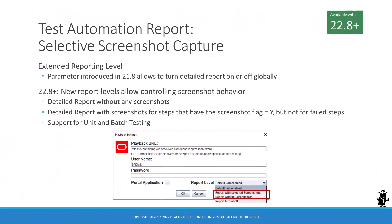If you are using Siebel Test Automation with 21.8 or higher, you might be aware of the option to turn detailed reporting on or off. With 22.8, Oracle has enhanced this capability with more fine-grained control. Instead of just turning the report on or off, test administrators can now choose two additional reporting options. The first new option is to get a detailed report but without any screenshots — meaning that even if a test step has the screenshot flag checked, there will be no screenshot, and the same is true for failed steps.